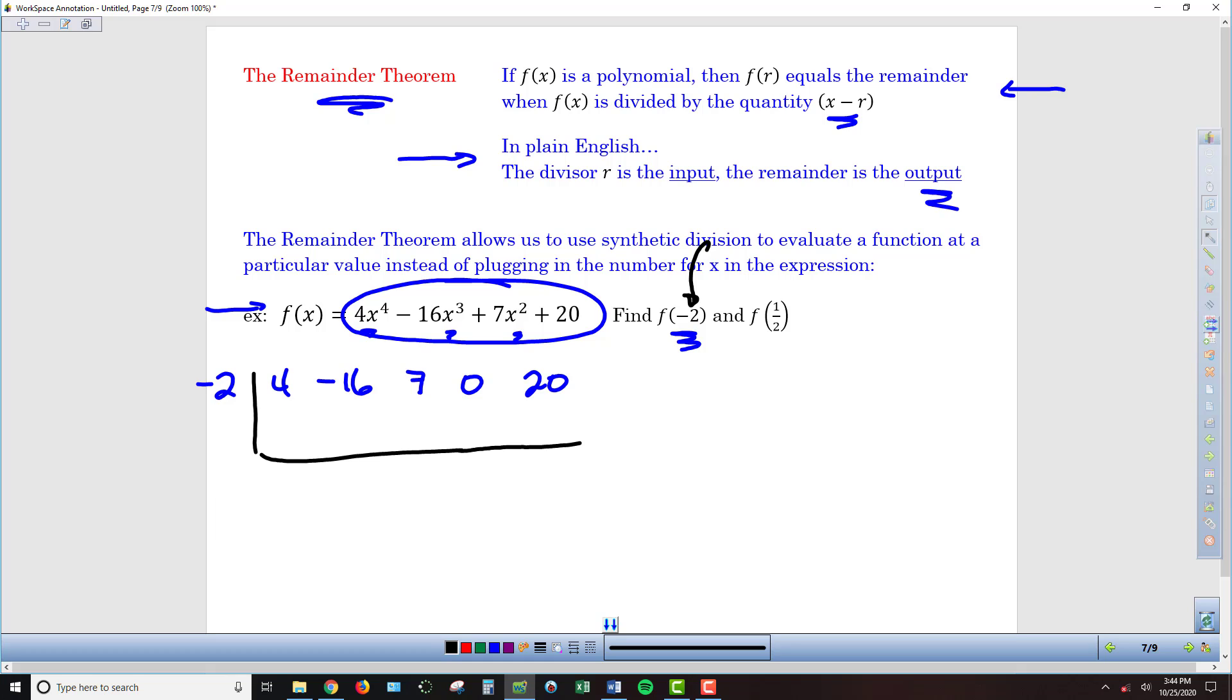Now we can go ahead and do our synthetic division. I bring down the 4 to get us started. Then we multiply on the diagonal, negative 2 times 4 is negative 8. Add in the vertical direction, negative 16 plus negative 8 gives us negative 24. Multiply on the diagonal, negative 2 times negative 24 is 48. Add in the vertical, 55.